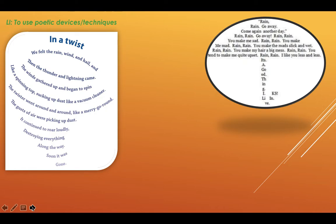Here we've got the shape of an umbrella. Why is it the shape of an umbrella? Because the title of this poem is to do with rain, and we normally use an umbrella to keep the rain off us. It's set out very simply: Rain, go away. Come again another day. Rain, rain, go away. Rain, rain, you make me sad. Rain, rain, you make me mad. So we've got a bit of rhyme going in there.